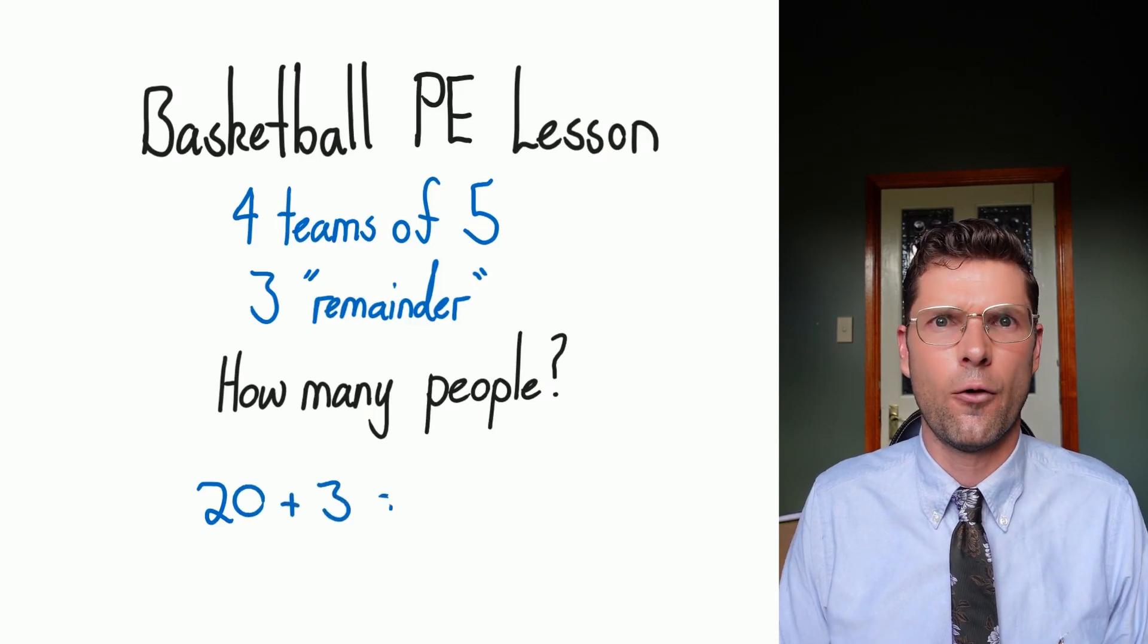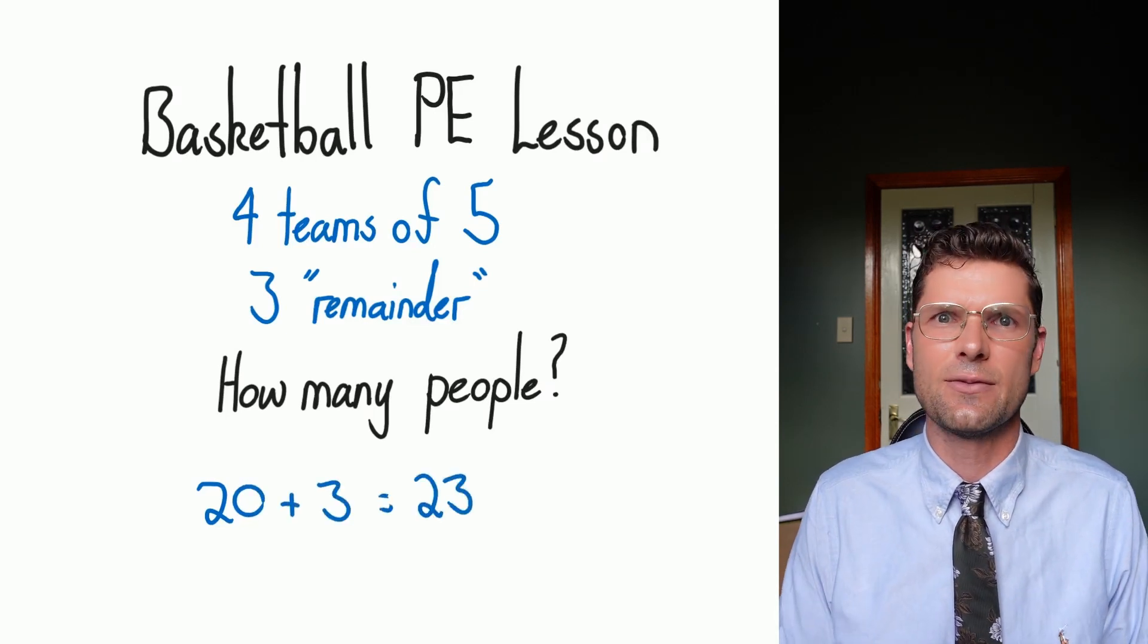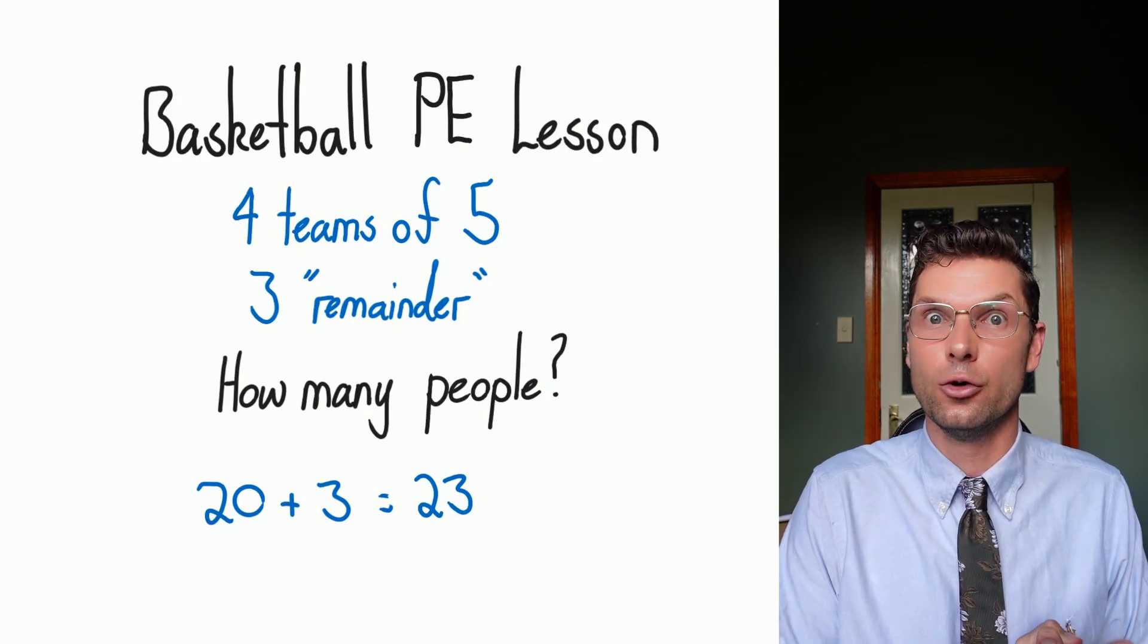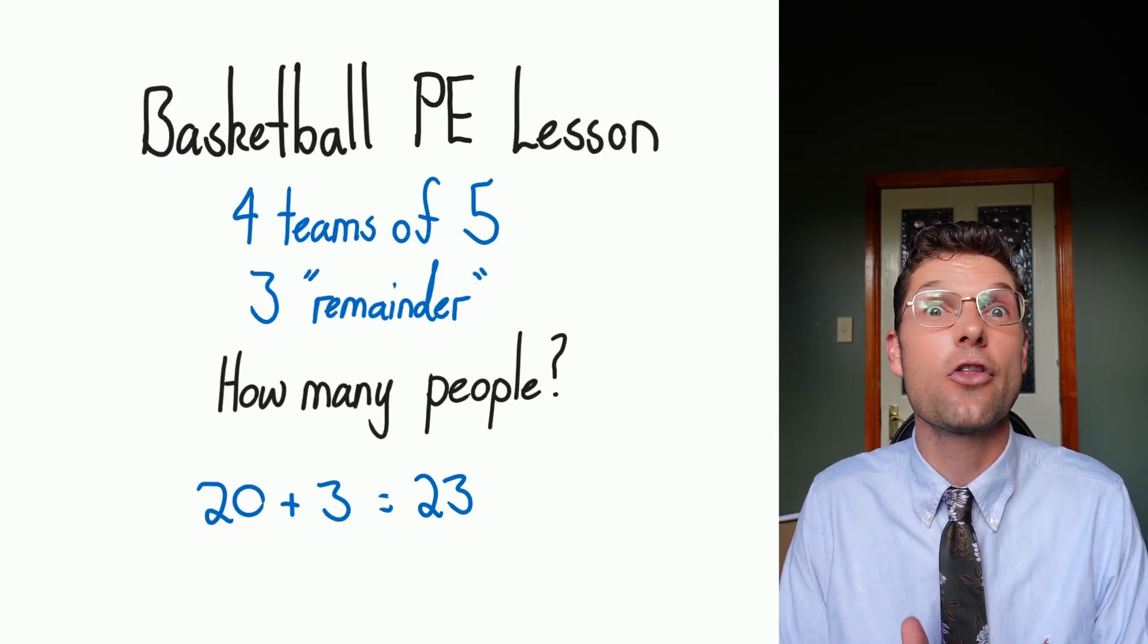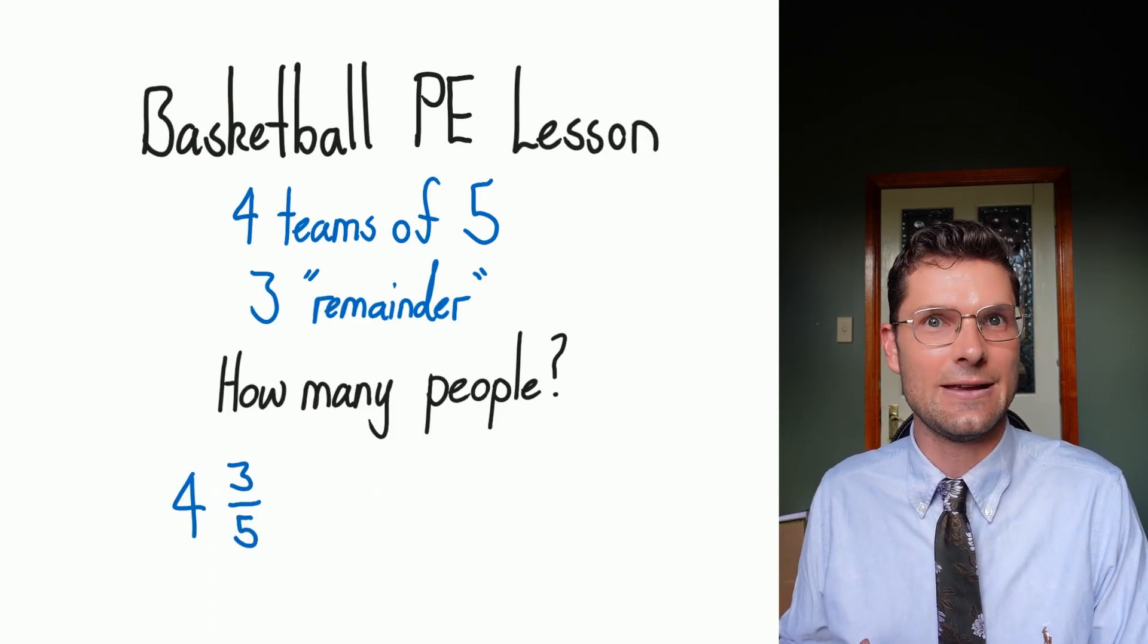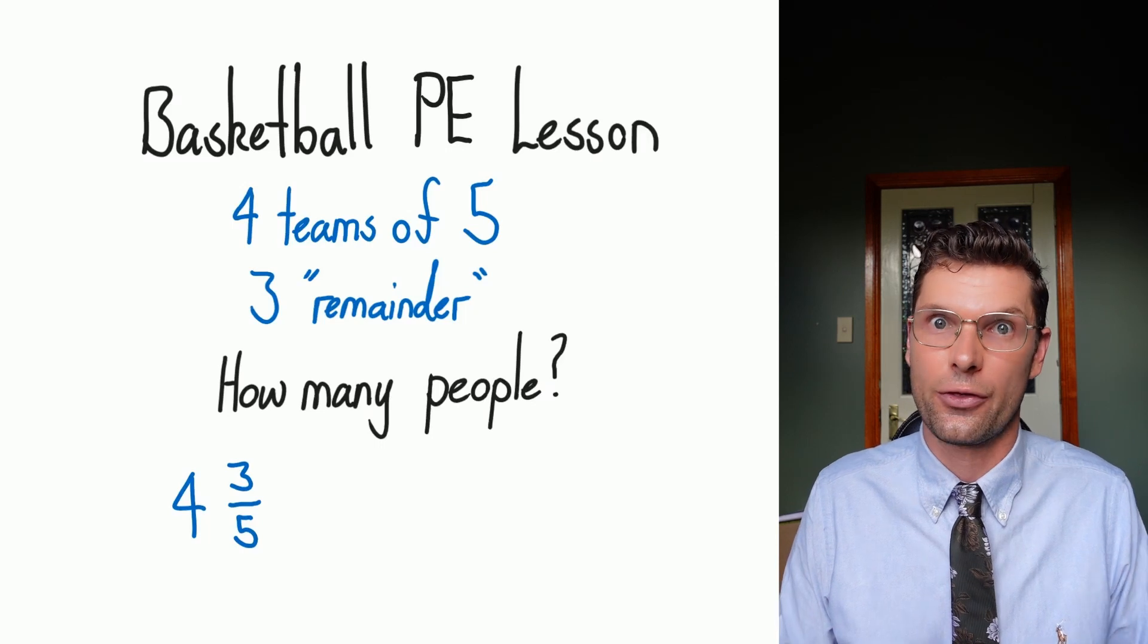You can really quickly go, oh, well, we've got four full teams, there's 20 people, three people sitting out, 23 people in total. So what this means is that I've got four full teams or four whole teams. So the whole number of four goes out the front. Then I've got three over five of the next team. So my mixed numeral is four three fifths.